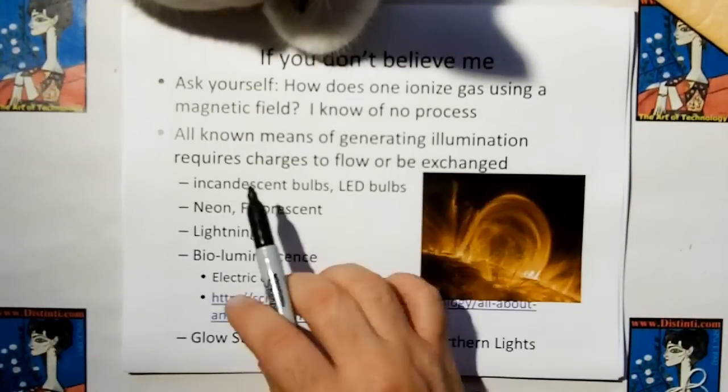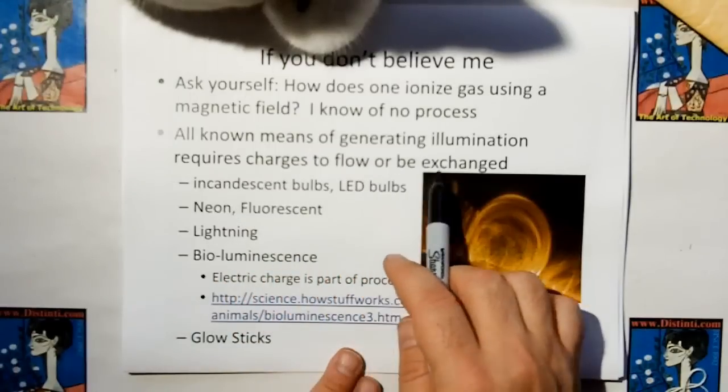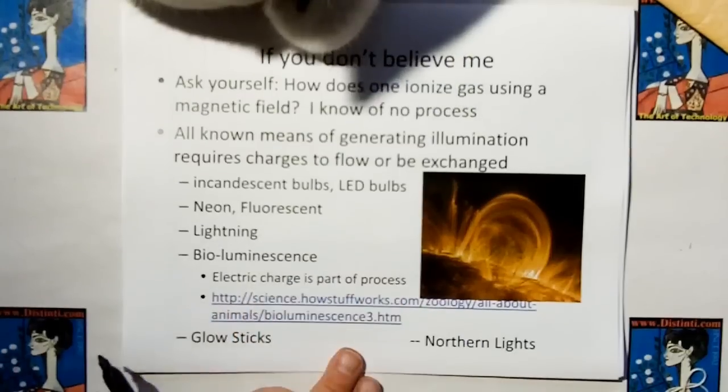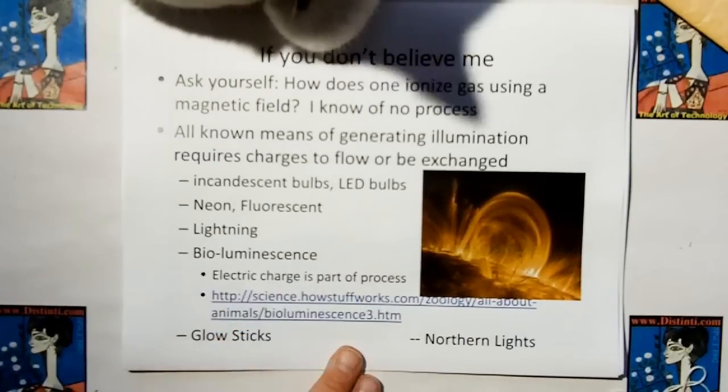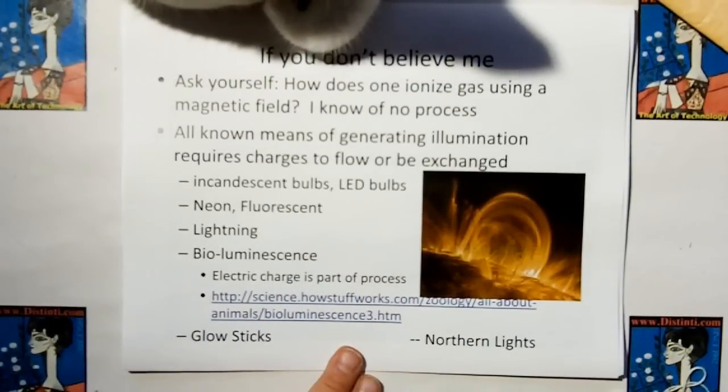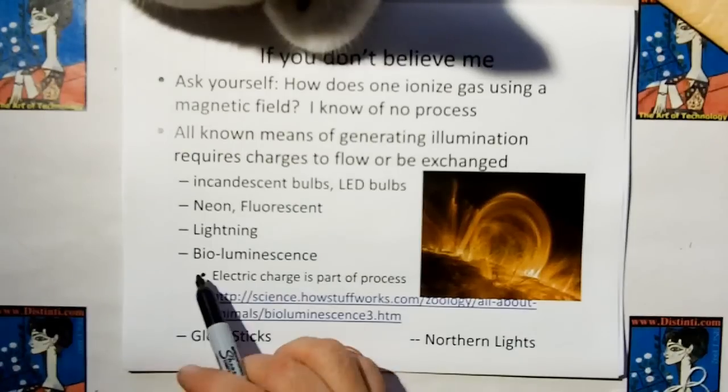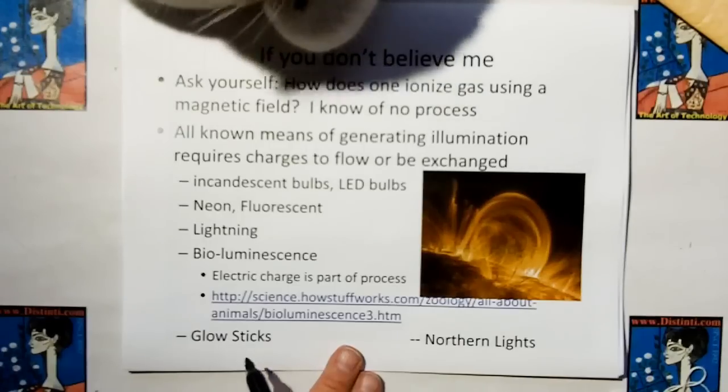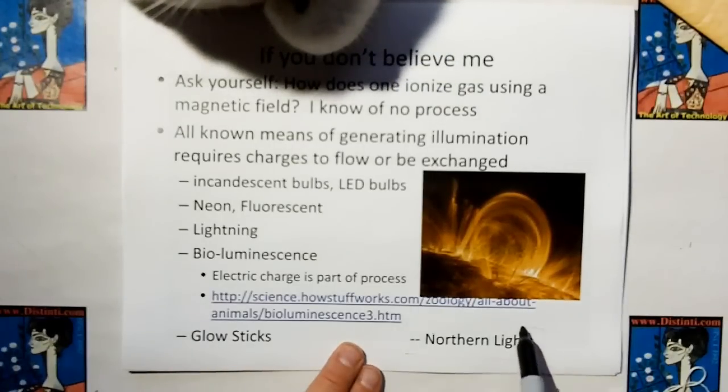And all known means of generating illumination require charges to flow or be exchanged. Incandescent bulbs, LED bulbs, neon or fluorescent bulbs, lightning as in cloud to cloud or cloud to ground lightning. Bioluminescence, charge is part of the process. You can go to that link. Glow sticks. Northern lights. This is interesting. When I did the research for this, it showed me there's another thing we got wrong.